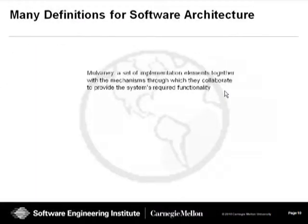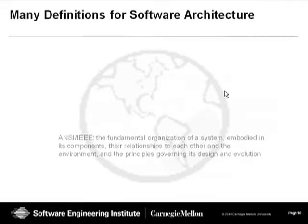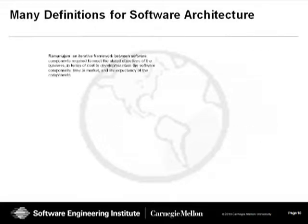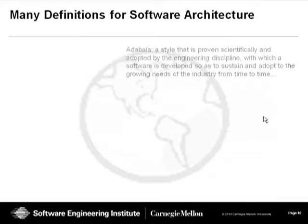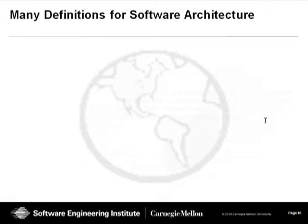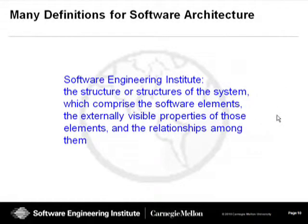So we will first talk about what is software architecture. There are a lot of definitions for software architecture out there. If you were to go to the SEI website, you would probably find that we've collected over 200 definitions for software architecture submitted by people from all over the world. You could actually go to the website and enter your own definition to add to that list. But one day the clouds opened up and God spoke to the people at the SEI and told us that this is the correct definition of software architecture — and of course I'm kidding.